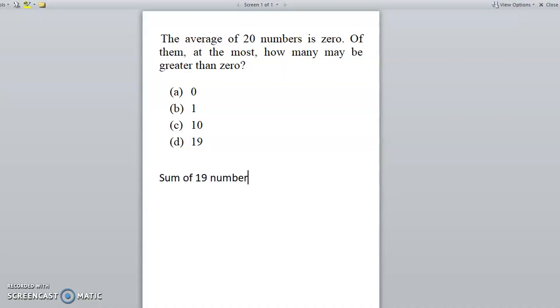19 numbers greater than 0. Suppose the 20th number, if we take a minus A, then the average will become 0. So the maximum number of numbers that may be greater than 0 is 19. That is option D is the right answer.